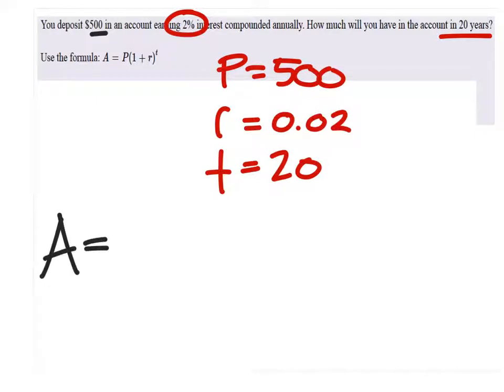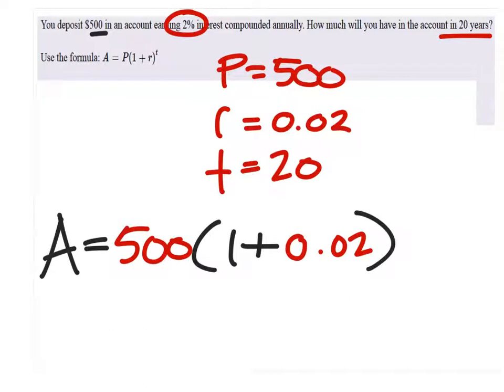Our future amount should be the principal, which is $500. And then we have one plus the rate, which is 2%. And this should be to the power of T, which is 20.